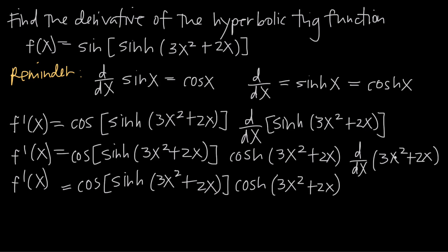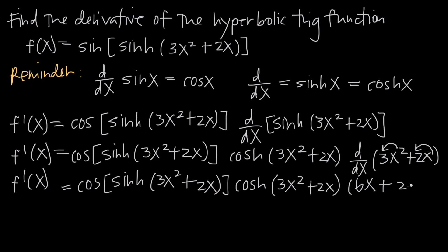Now we just need the derivative of the polynomial 3x squared plus 2x — a simple power rule. We bring the exponent down and multiply by the existing coefficient: 3 times 2 gives us 6, keep x, and subtract 1 from the exponent, giving 6x. For 2x, which is 2x to the first, bring the 1 down: 2 times 1 is 2, and 1 minus 1 is 0, so we get 2x to the 0, which is just 2. So the derivative is 6x plus 2.